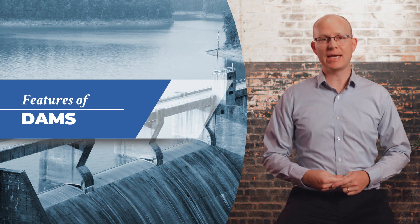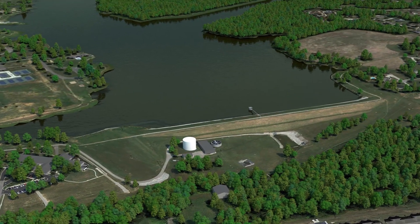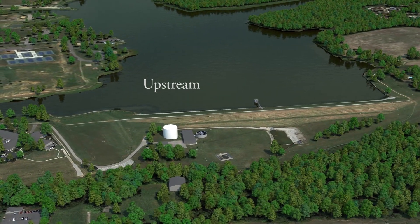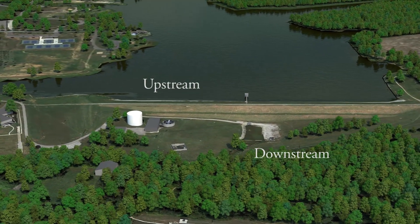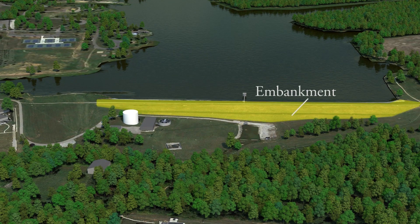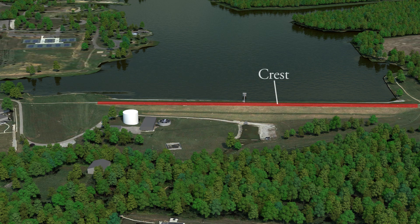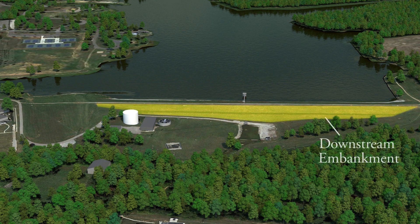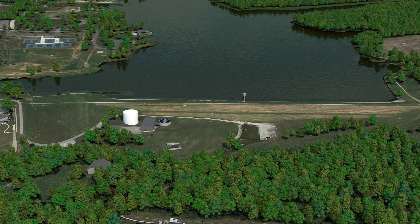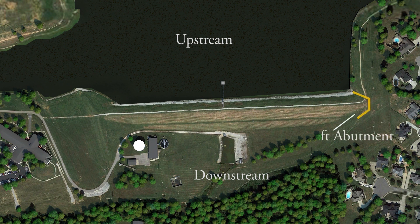Now let's look at some common features of dams and how they function. Water flows through a dam from the upstream or pool side to the downstream side. The embankment is the portion of the dam constructed to hold back or impound the reservoir or pool. The crest refers to the top of the dam. The downstream embankment is the sloping portion on the dry side, sometimes called the face of the dam. Where this slope ends and joins with the natural ground surface is called the toe of the embankment. The portion of the dam that adjoins the valley is called the abutment. When referring to the left and right side of the embankment, it's based on the perspective looking downstream.